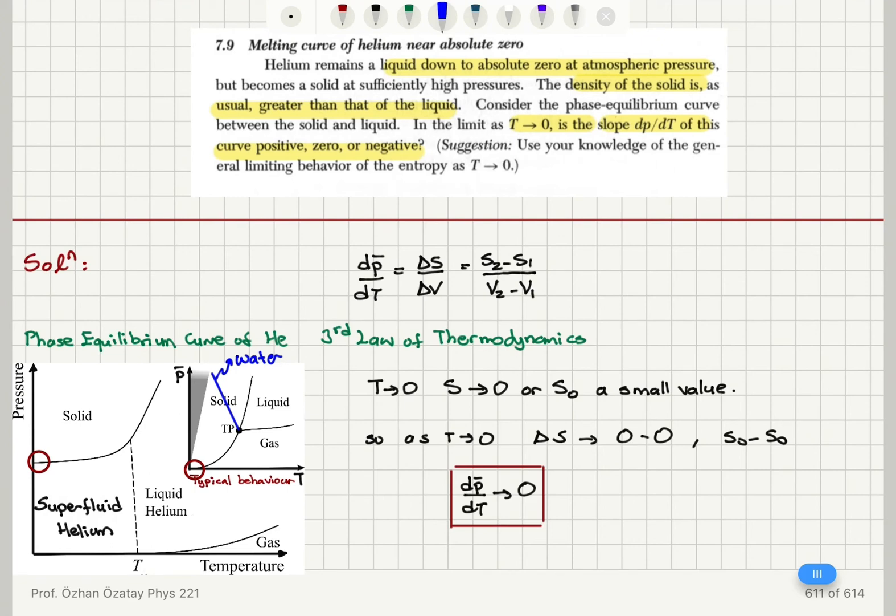So here it's said that the density of the solid is greater than that of the liquid, so when we go from the solid to liquid phase, the entropy increases, and also the volume is going to increase. So therefore,